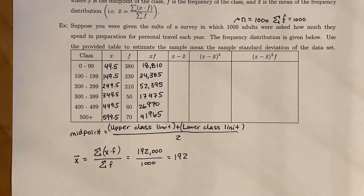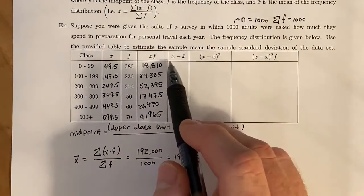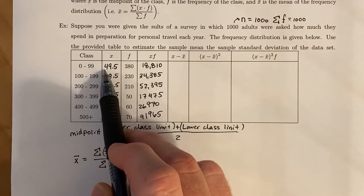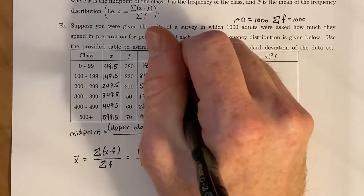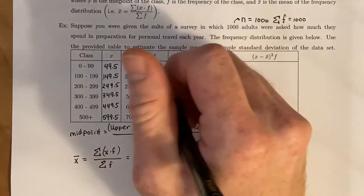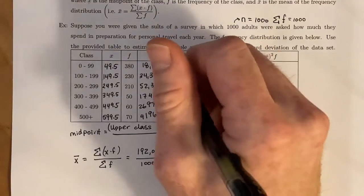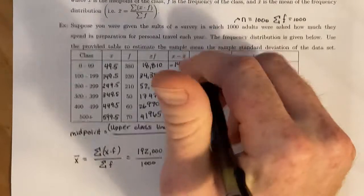On average, how much people spend in preparation for personal travel each year looks to be about $192. Next, we want to figure out how much spread this data set has. We have to first find all the deviations. We take X minus X-bar. We take 49.5 minus 192, and we end up getting negative 142.5. Then we do the same thing with 149.5 minus 192, which gives us negative 42.5.